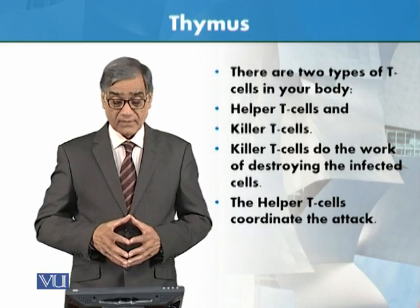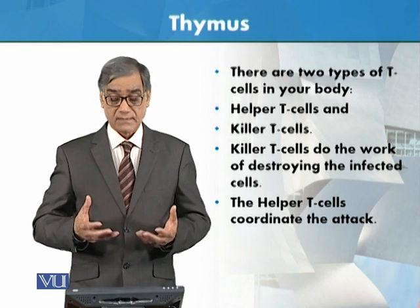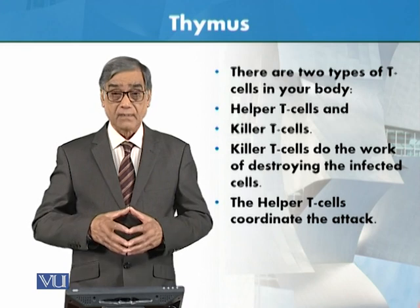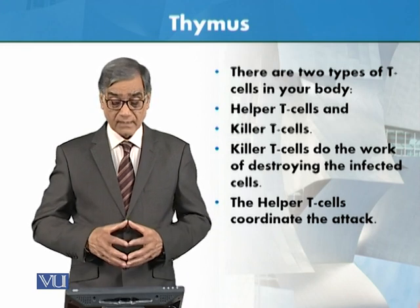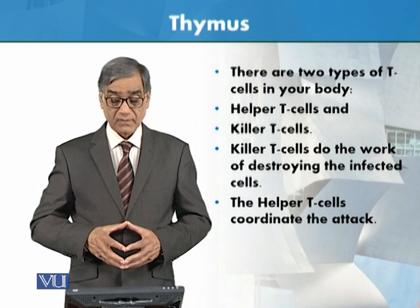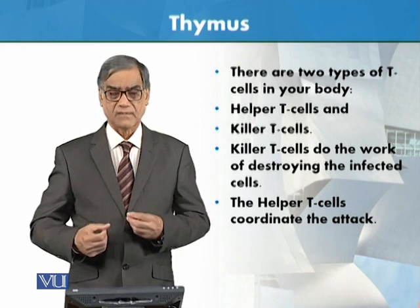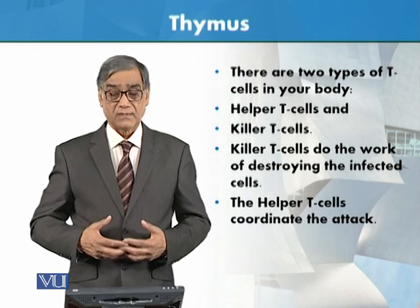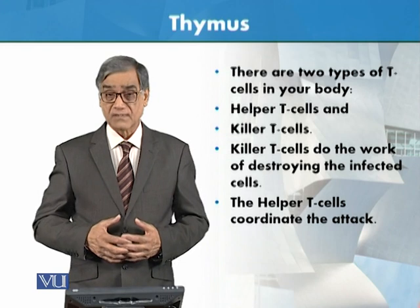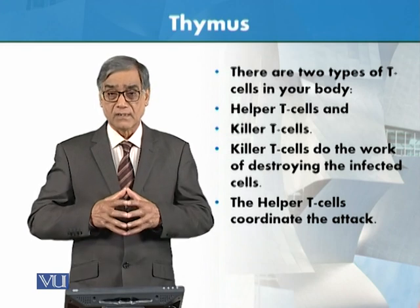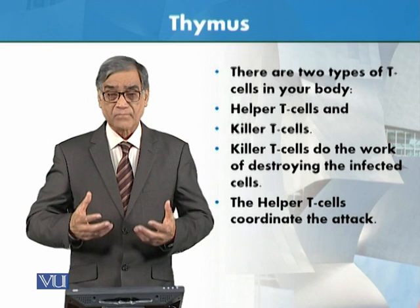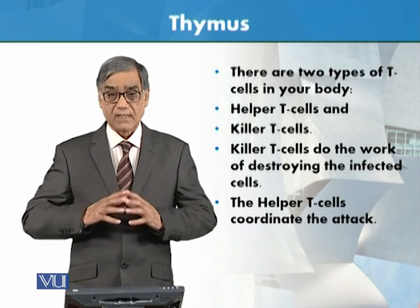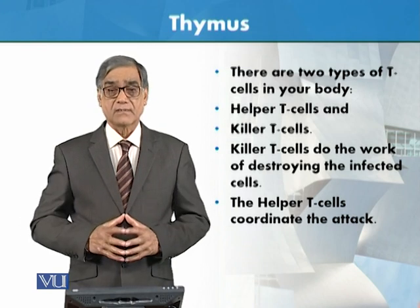There are two types of T cells in our body: helper T cells and killer T cells. Killer T cells do the work of destroying infected cells. If there is an infection in the body, these T cells, as part of the immune system, start destroying the infected cells.